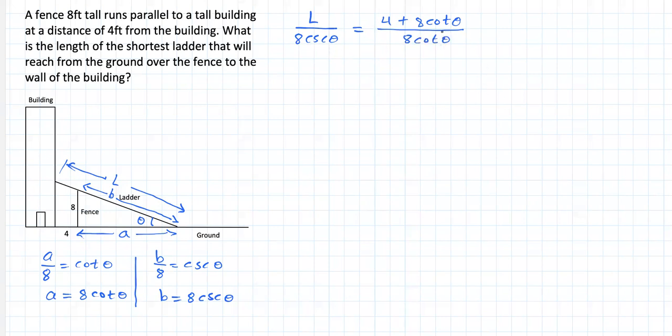Now, if you work out this relationship by cross-multiplying and substituting cosecant with 1 over sine, cotangent with cosine over sine, you're going to end up with this. L equals 4 over cosine of theta plus 8 over sine of theta. Which is equivalent to the following: 4 times secant of theta plus 8 times cosecant of theta.